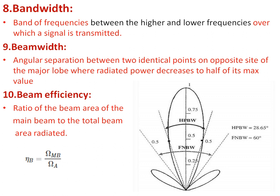Then what is beam width? Beam width is the angular separation between two identical points on opposite sides of the major lobe where the radiated power decreases to half of its maximum value. In the diagram, this is the major lobe; this is the peak value of the major lobe, and if we come to exactly half the value of the lobe, we get two points. The angle between these two points is the beam width of that antenna. So it is the angular separation between the two half-power points on opposite sides of the major lobe.